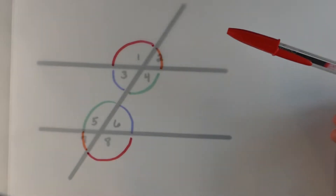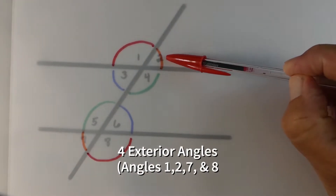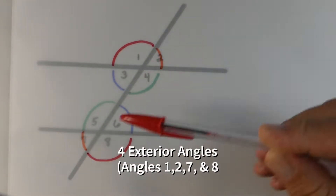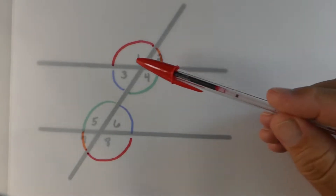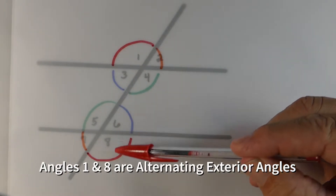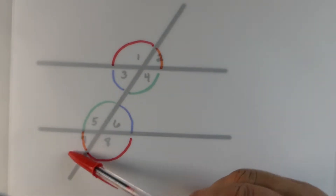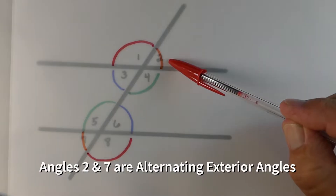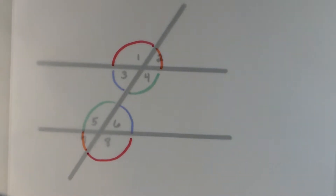Exterior angles are the angles that are outside or not between the parallel lines — so angles one, two, seven, and eight. Angles one and eight are what we call alternating exterior angles, and they're going to be the same, and the same with two and seven — they're the same measurement.